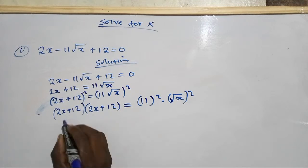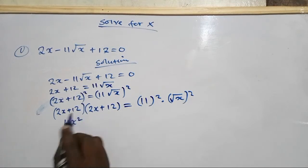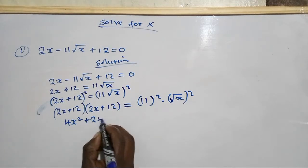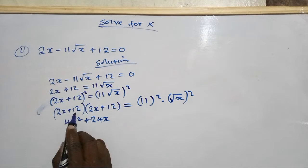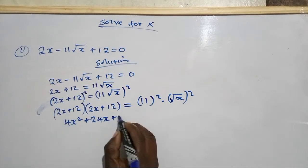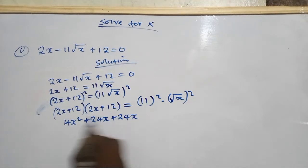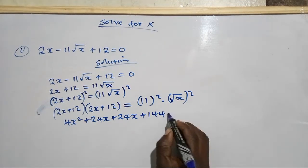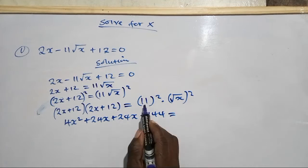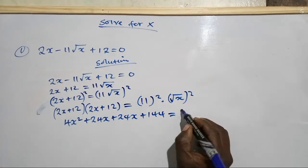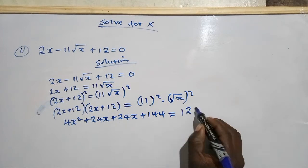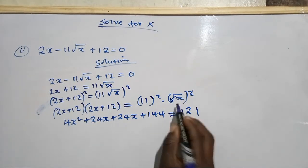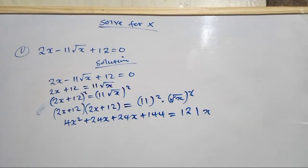Expanding: 2x times 2x gives 4x squared, then 2x times 12 gives plus 24x, then 12 times 2x gives plus 24x, and 12 times 12 gives plus 144. This equals 121x, since 11 squared is 121 and the square root squared leaves just x.